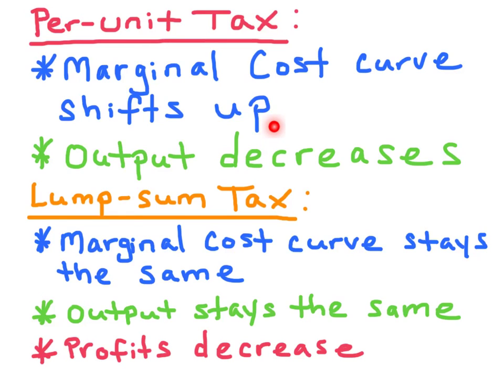So when the MC curve shifts up, the output will decrease. If you're working with a monopoly, the total revenue will fall as the price rises, output decreases, and the profit will also decrease.